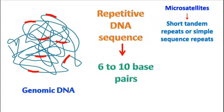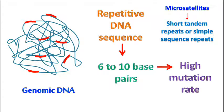These short repetitive DNA sequences can be present at thousands of locations in the genome. One of the unique characteristics of this repetitive DNA is that it has a high mutation rate as compared to other regions of the genome.